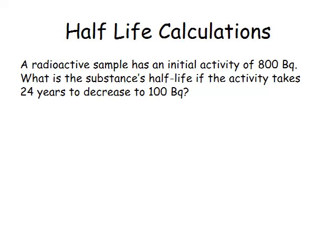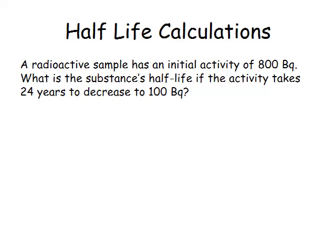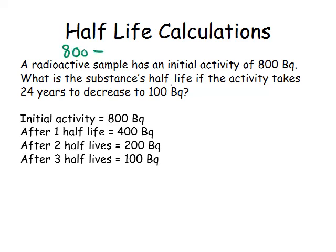A radioactive sample has an initial activity of 800 becquerels. If it takes 24 years to decrease to 100 becquerels, what is its half-life? In a similar way, we can write it as a list. First, I would write it across. 800 to 400 to 200. Keep halving until you end up with your final activity.